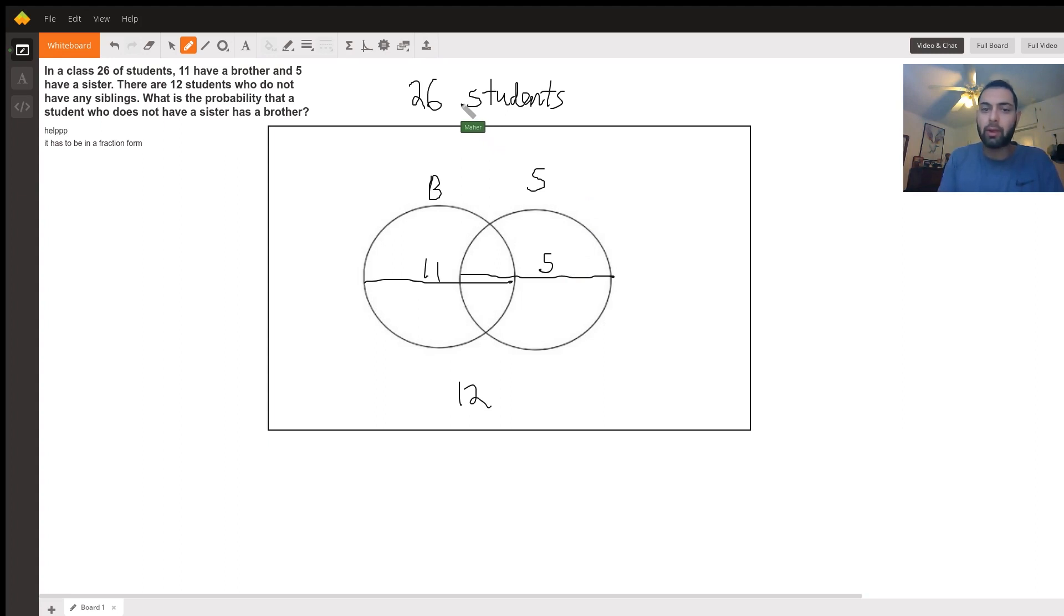That means two students were counted twice. In order to be counted twice, that means they had to have had a brother and a sister. So we could erase the 11 and 5, and we know now there are only 2 that have both a brother and a sister in the class.